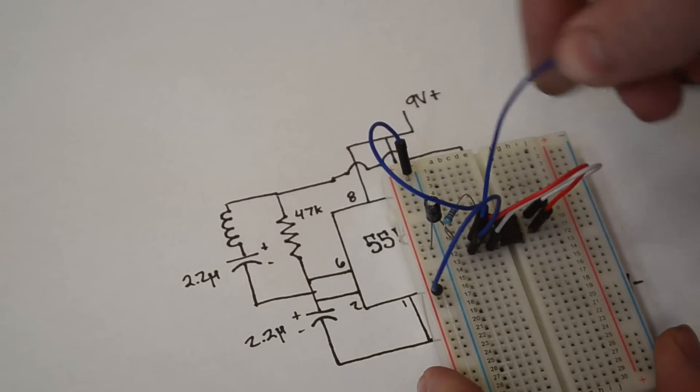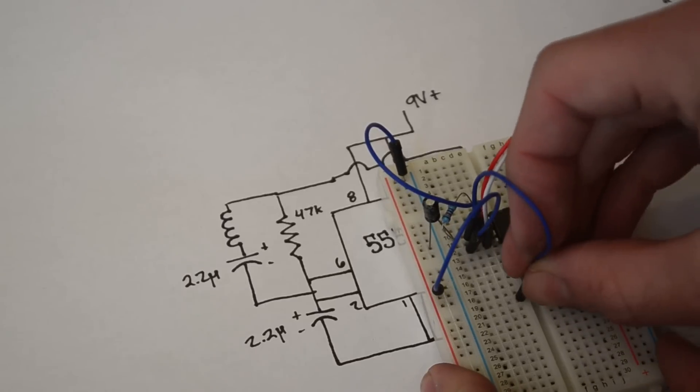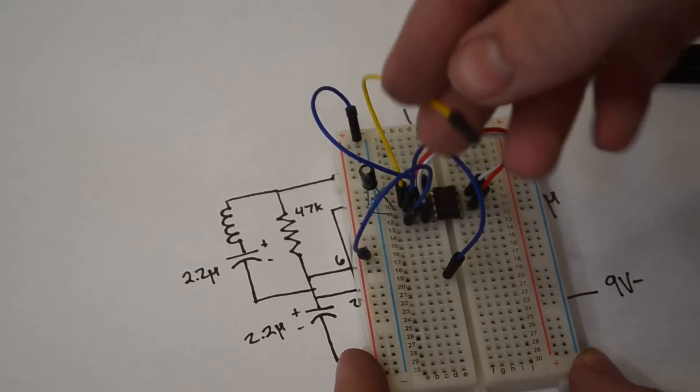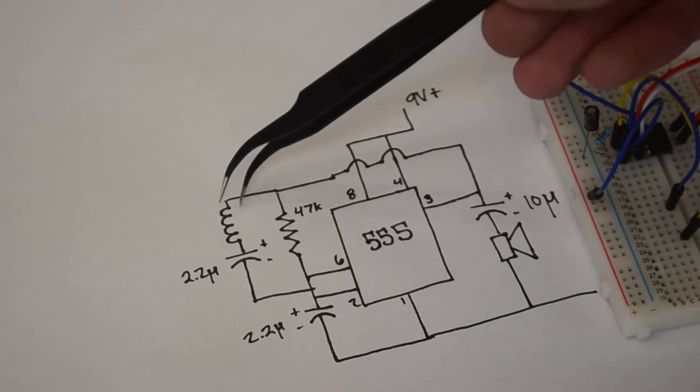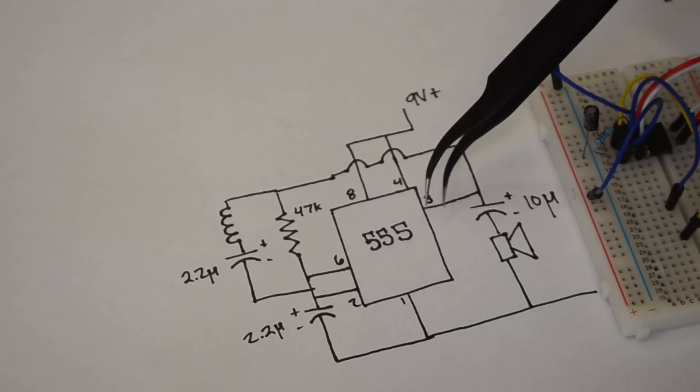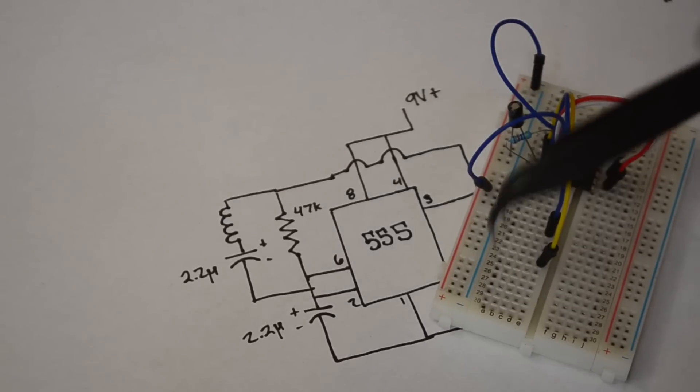Since I need to connect up more things to pin 3, I'm going to take this wire and put it to another rail down here. And then I'm also going to take this wire, connect it up to pin 2 and bring it down here as well. Since later on we're going to need to connect up this coil and this capacitor to pin 3, putting these two rails down here should make that easier.